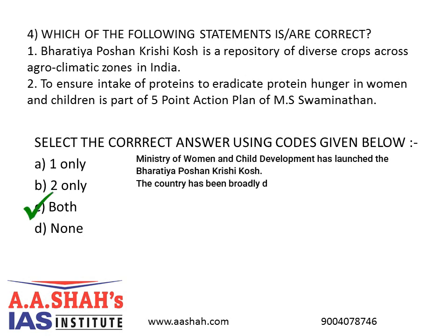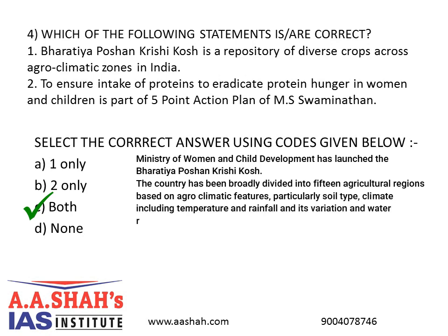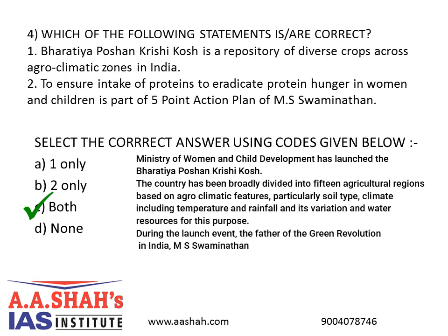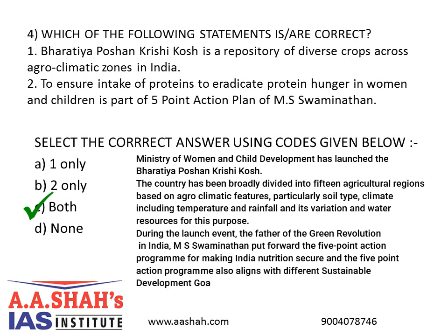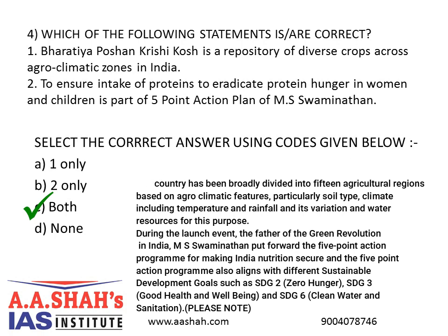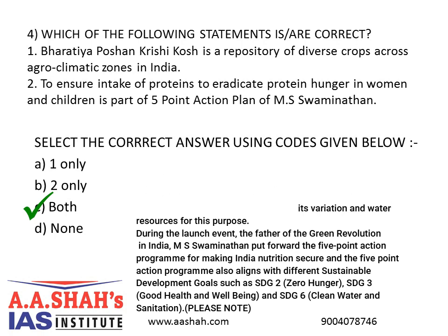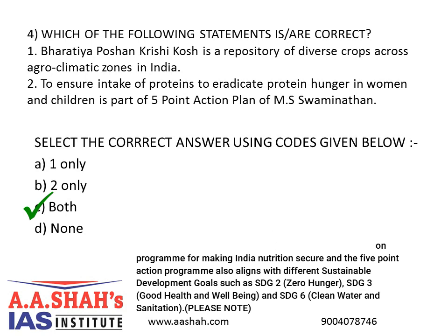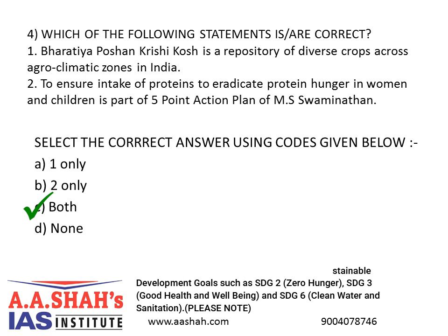The Ministry of Women and Child Development has launched the Bharatiya Posh on Krishikosh. The country has been broadly divided into 15 agricultural regions based on agro-climatic features, particularly soil type, climate including temperature and rainfall and its variation in water resources. During the launch event, the father of the Green Revolution in India, MS Swaminathan, put forward a Five-Point Action Program for making India nutrition secure, which aligns with SDG 2 (Zero Hunger), SDG 3 (Good Health and Well-Being), and SDG 6 (Clean Water and Sanitation).